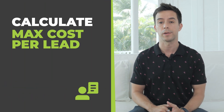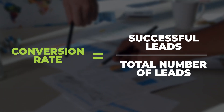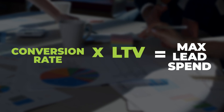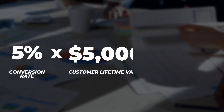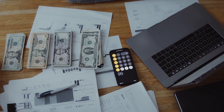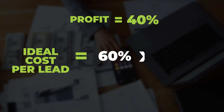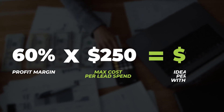It's really that simple. Now we're going to figure out the maximum you would ever want to pay to acquire one of these $5,000 customers. To do this, we need to know your conversion rate — what percentage of the time do you convert leads. We then multiply that by your lifetime value to get the maximum you could ever pay for a lead and break even. So for example, if you convert 5% of leads, the max you should pay to break even is 5% times $5,000, which is $250 each. But you want to actually make some money, so let's put a profit buffer in there. Let's say you wanted to make 40% profit — then your ideal cost per lead is 60% times your maximum cost per lead. Using the example from before, we'd want to ideally pay $90 for a lead.